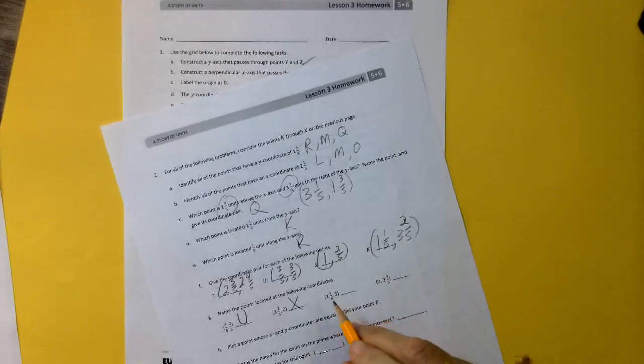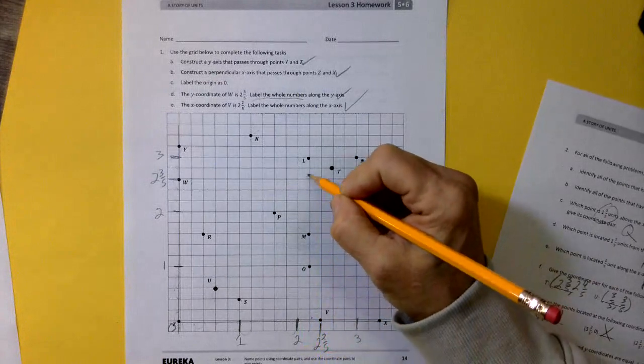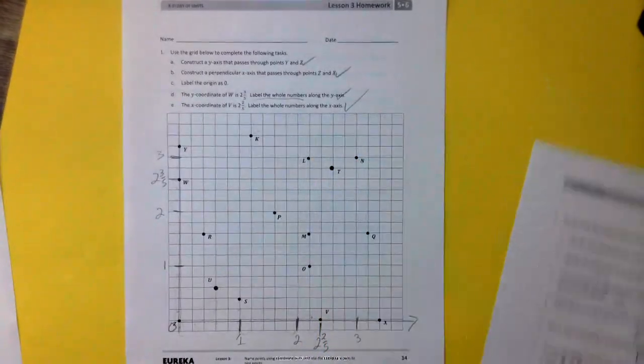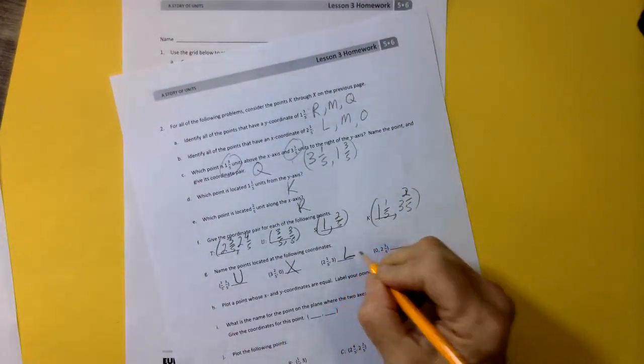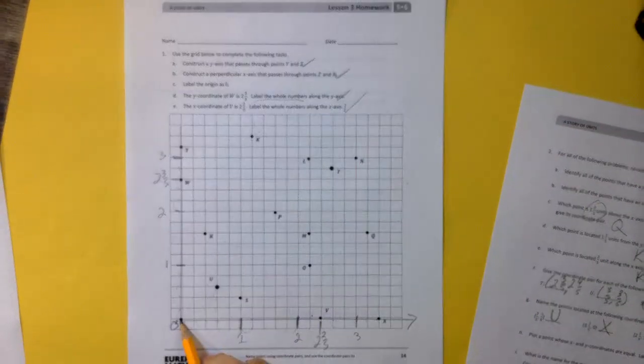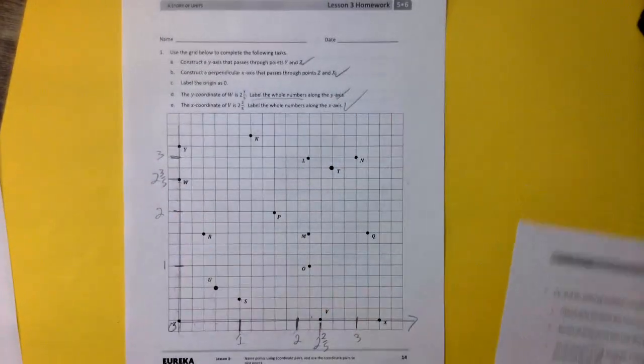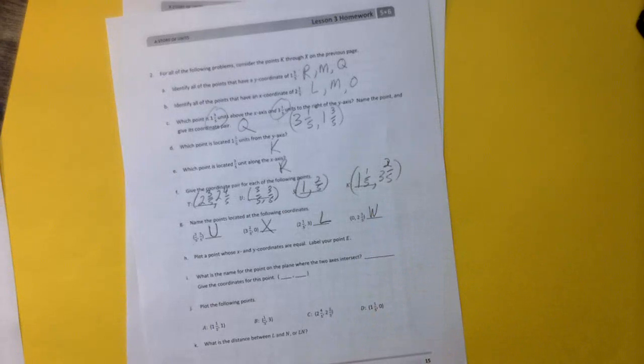2 and 1 fifth and 3. 2 and 1 fifth and then all the way up to 3. That's L. 0 and 2 and 3 fifths. So we go over 0 and up 2 and 3 fifths. That's one of the things we had to label to begin with. So we know that's W.